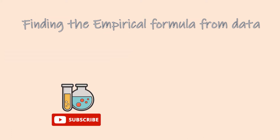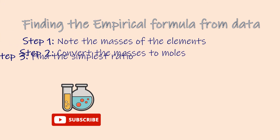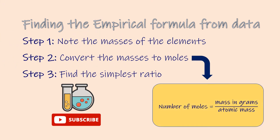Now you have learned how to calculate the empirical formula of any compound if you are given the percentage composition or the masses of all the elements making the compound. Please remember that you always need to use the same steps. To calculate the number of moles in step 2, you need to divide the mass of the element by its atomic mass.